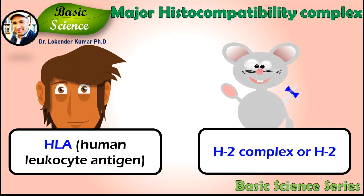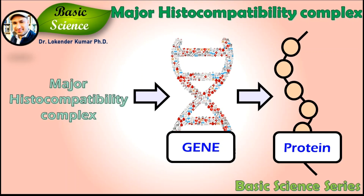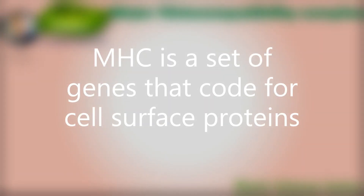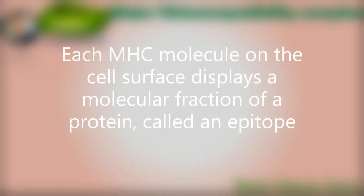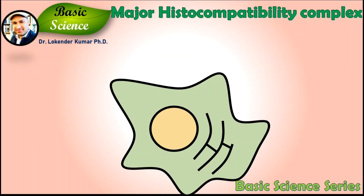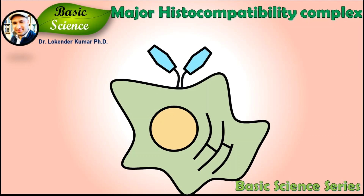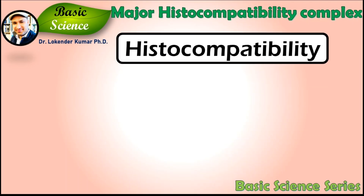MHC is a set of genes — part of our DNA — that encodes specific proteins. The question is: what kinds of proteins do MHC genes encode? They encode cell surface proteins that are essential for the immune system to recognize foreign molecules.